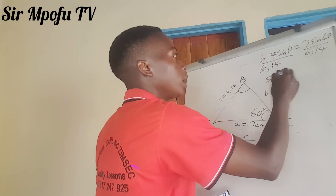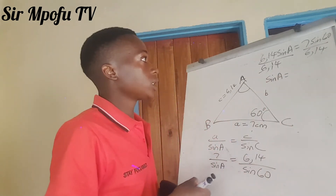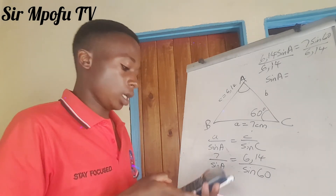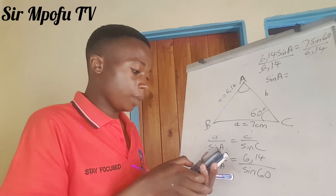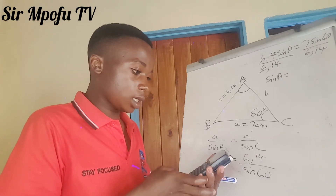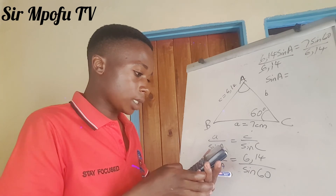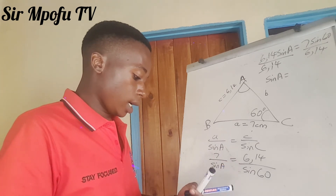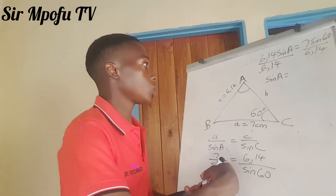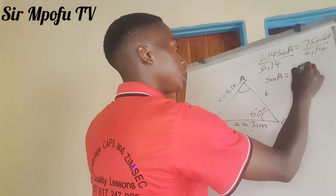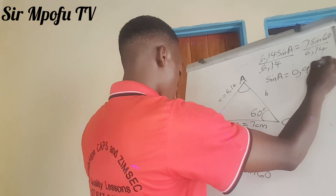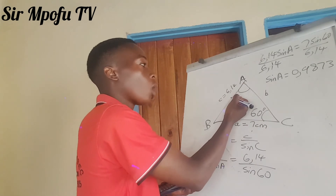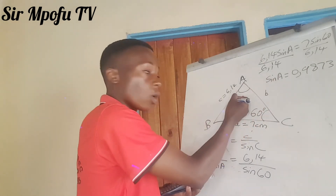So sine A equals — if you punch that on a calculator: 7 times sine 60, press equals, then divide by 6.14, and you get approximately 0.9873. So for you to get the actual angle, because this is sine A and we want angle A...